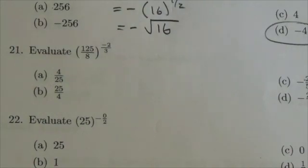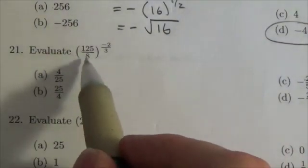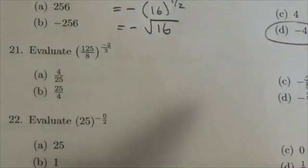Hi everyone, this is the Math 10c exponents and radicals review. This is multiple choice question 21. Evaluate 125 over 8 to the negative 2 thirds.